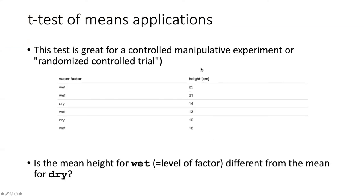The t-test of means is exactly the right kind of test for a controlled manipulative experiment like the one that we were describing for the science fair where you have beans planted in wet and dry soil because you are manipulating the amount of water and basically seeing what happens.